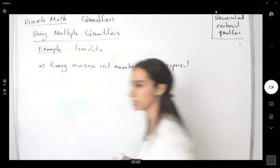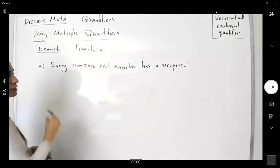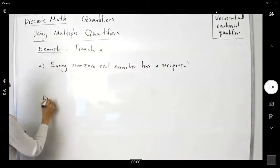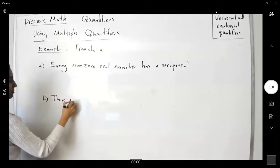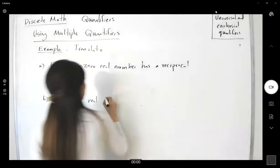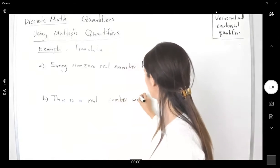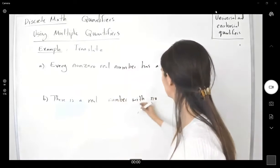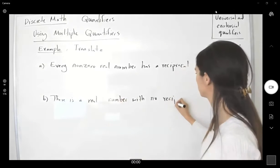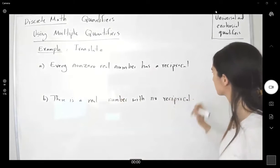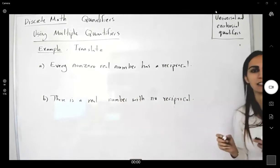And the second one says there is a real number with no reciprocal. There is a real number with no reciprocal. Let's see. How do you translate this?